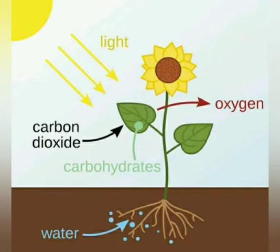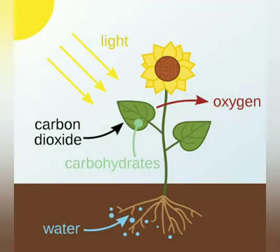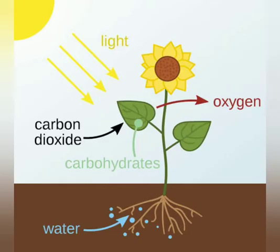Plants breathe carbon dioxide just like we breathe oxygen. When plants breathe carbon dioxide in, they breathe oxygen out for us. Plants are a major source of oxygen on our planet and help keep us alive. Plants use sunlight as energy, they get water from rain, and they get carbon dioxide from breathing.